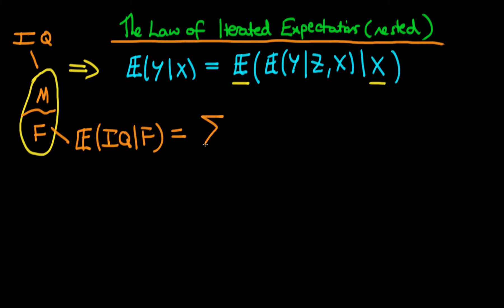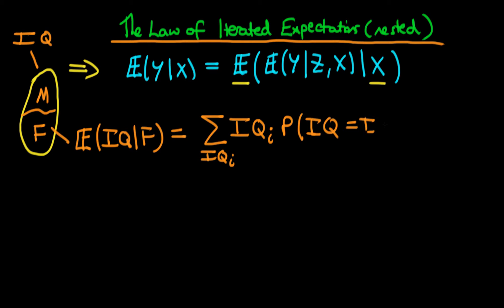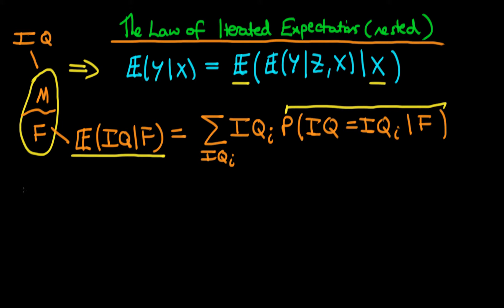We could evaluate this quite easily. All we would do is sum over all the different values of IQ within that subpopulation. It would be a weighted sum of that particular value of IQ times the proportion of the subpopulation which has IQ equal to that specific value, given that they are within the female population. This is just a weighted sum where we're weighting by the proportion of the subpopulation which has that particular value of IQ. Another way we could work out the average level of IQ within the female population would be to break up the female population into two or more subsamples.